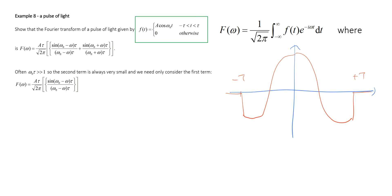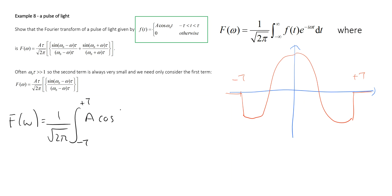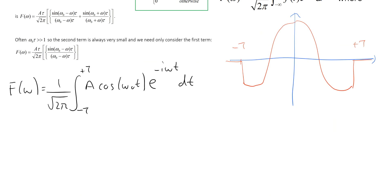So we can calculate the Fourier transform. We're given the equation for the Fourier transform on the top right: f of omega is equal to 1 divided by the square root of 2 pi. In the integral, we account for the function cutting off by putting the limits minus tau to plus tau, and then we have cosine omega-0 t times the complex exponential e to the minus i omega t dt. So we've got to integrate the product of a cosine and an exponential.